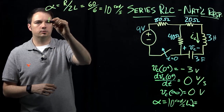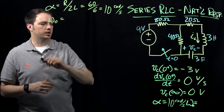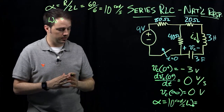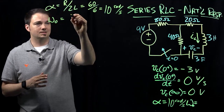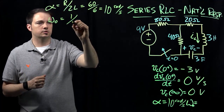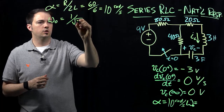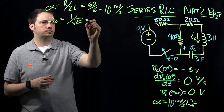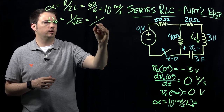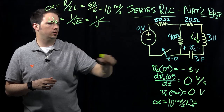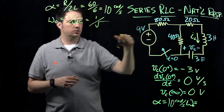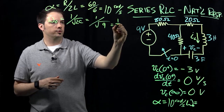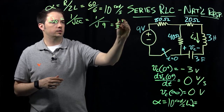For omega-naught, the resonant radian frequency, the expression is the same in both parallel and series configurations: 1 over the square root of LC. Here we have 1 over the square root of the inductance times the capacitance, which is 9. That evaluates to 1/3 radians per second.